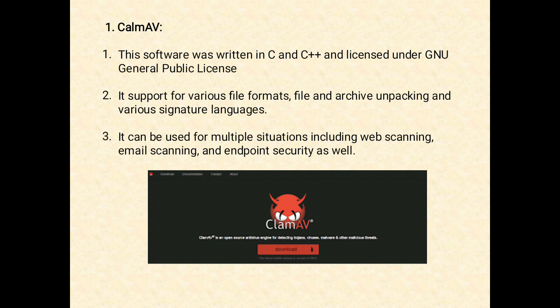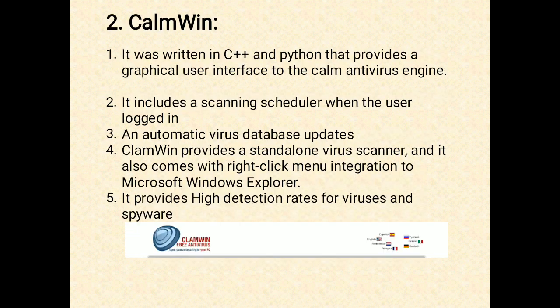The next software is ClamWin. It is a free antivirus used by more than 6.6 lakh users worldwide on a daily basis. It comes with an easy installer and open source code. You may download and use it absolutely free of charge. It was written in C++ and Python.